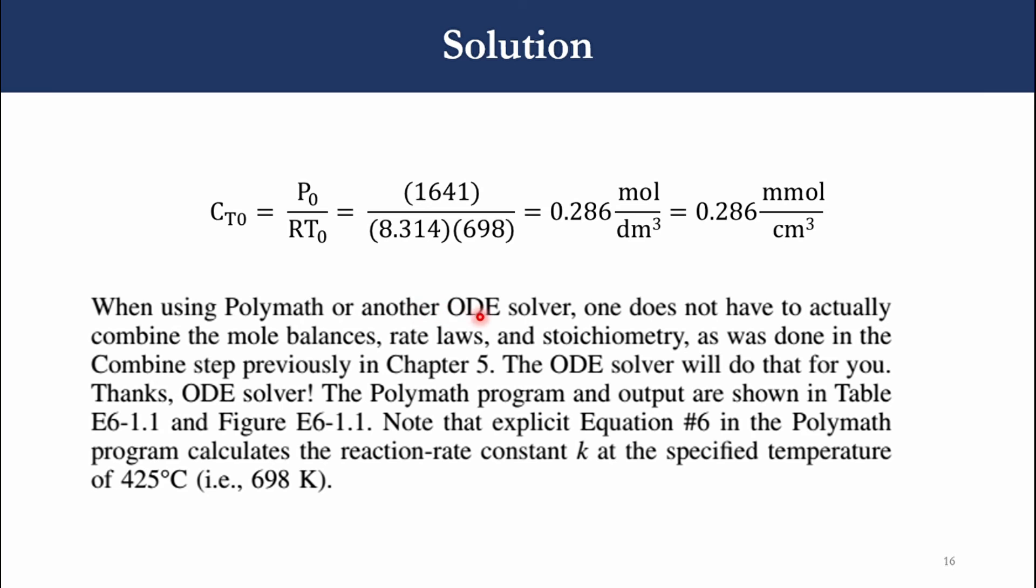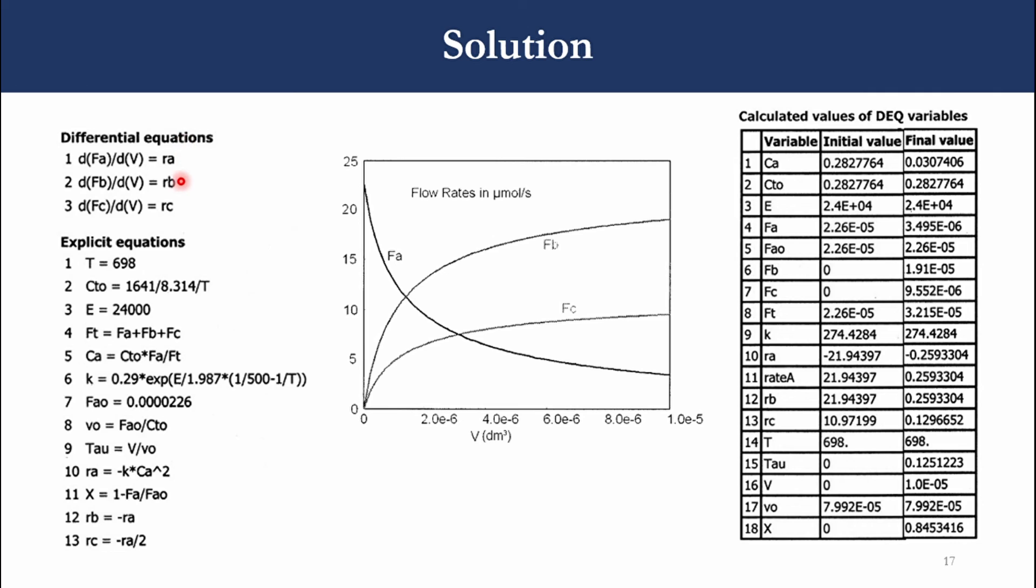When using polymath or another ODE solver, ordinary differential equation solver, one does not have to actually combine the mole balance, rate law, and stoichiometry as was done in the combined step previously in chapter 5. The ODE solver, which is polymath, will do it for you. First we need to enter the differential equations in polymath, and the remaining equations we have derived will be written in polymath. You can see we get the answers over here. This is the final solution where we can see the plot, the flow rate plot in part A of this question. Accordingly the conversion is calculated, which although was asked as 85%, but is approximately 84.5%. We will do this part of polymath in our upcoming lecture to see how these equations are written in polymath and how we can proceed with it.